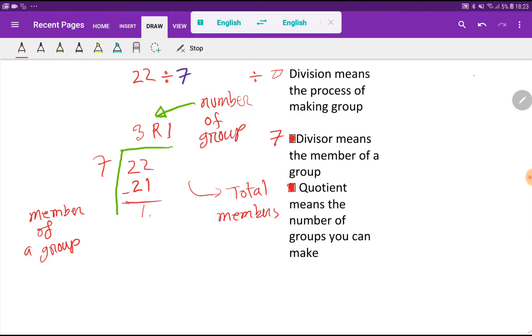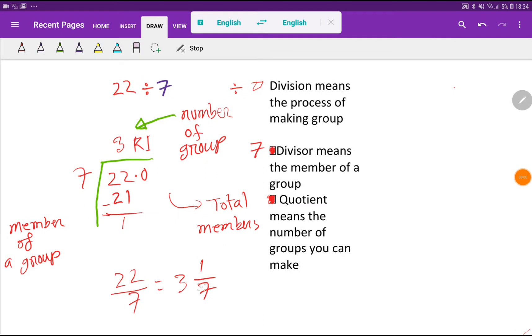The answer is 3 remainder 1. Or you can write like this: you can write 22 divided by 7 equal to—first you have to write the quotient 3, then you have to take remainder, then you have to put the divisor: 3 and 1/7. This is a mixed number.